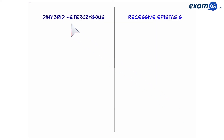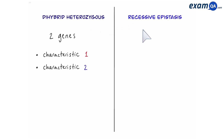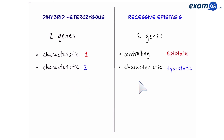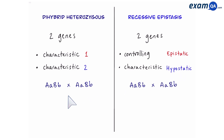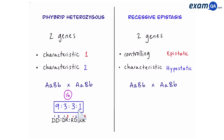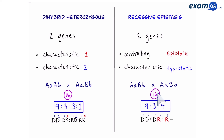To compare: in a dihybrid heterozygous cross, two genes both code for a characteristic. In recessive epistasis, one gene is the controlling epistatic gene and one is the characteristic hypostatic gene. Crossing two heterozygous individuals in both cases gives 16 offspring. For dihybrid, the ratio is 9:3:3:1 with four phenotype combinations. For recessive epistasis, there are only three phenotypes split as a 9:3:4 ratio.